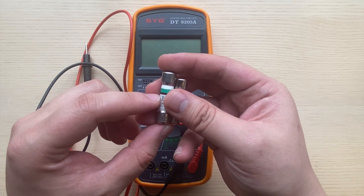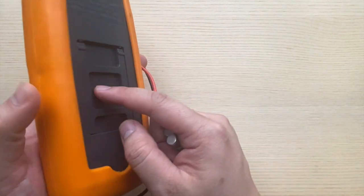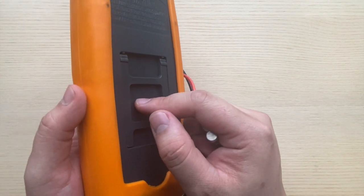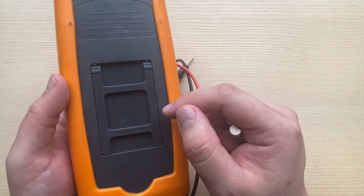Replacing a fuse is as simple as unscrewing the back of your multimeter, popping the blown fuse out, and sliding the new fuse in.